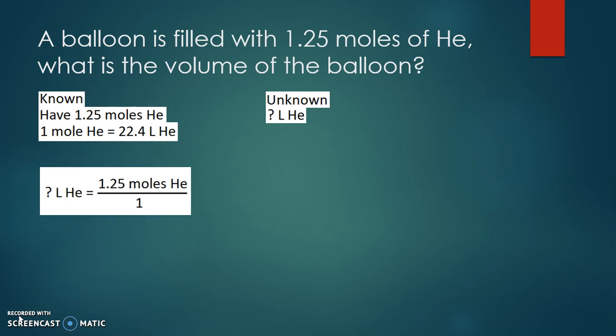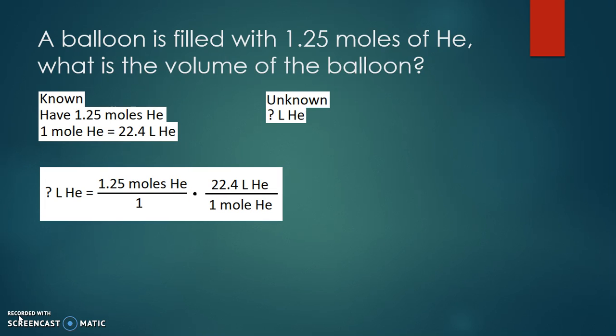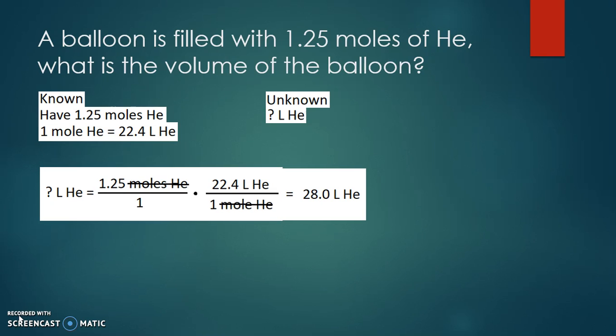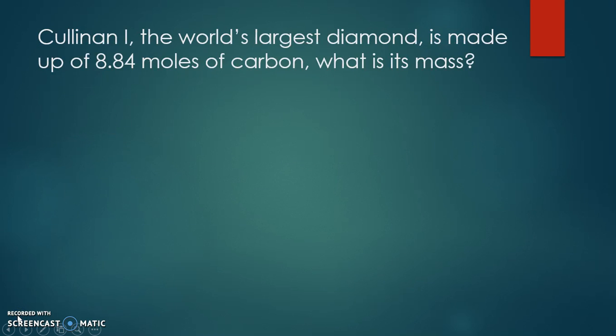Taking our given of 1.25 moles of helium over one, we use the conversion factor with moles on the bottom and 22.4 liters over one mole of helium on top. Moles cancel out, and 1.25 times 22.4 gives us 28 liters of helium in that balloon.